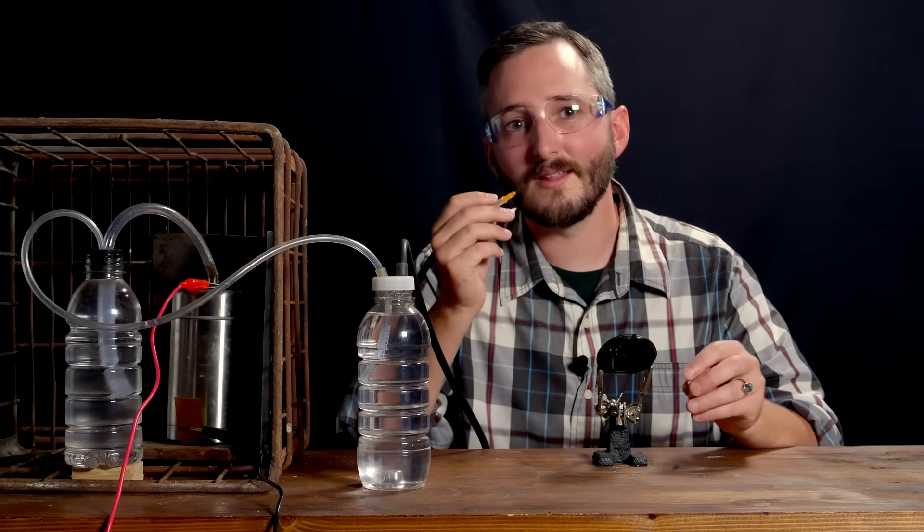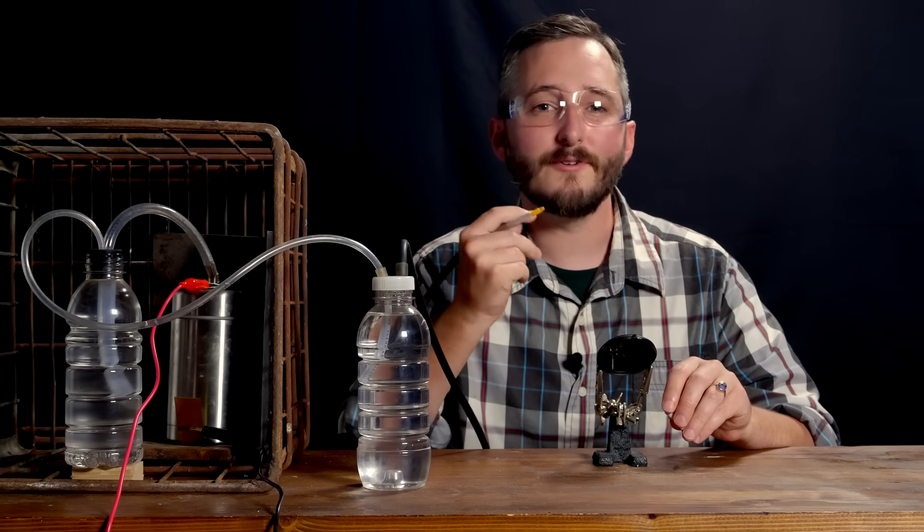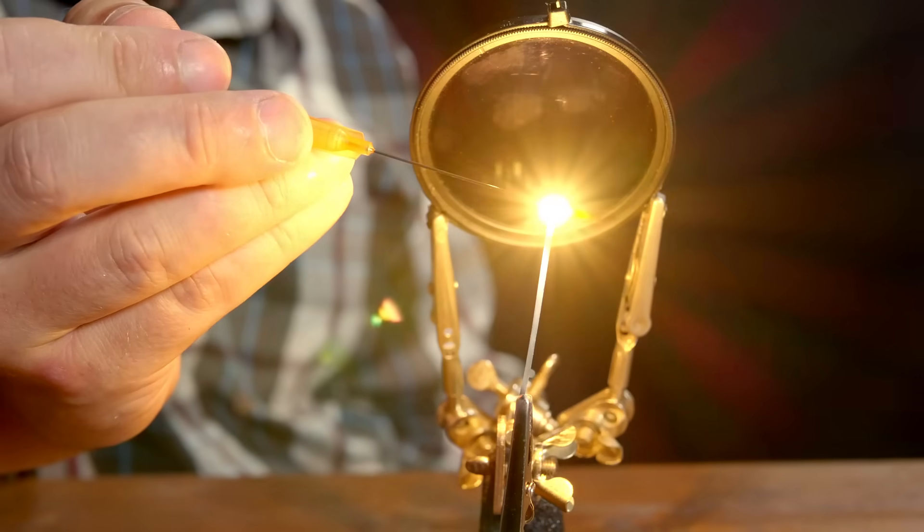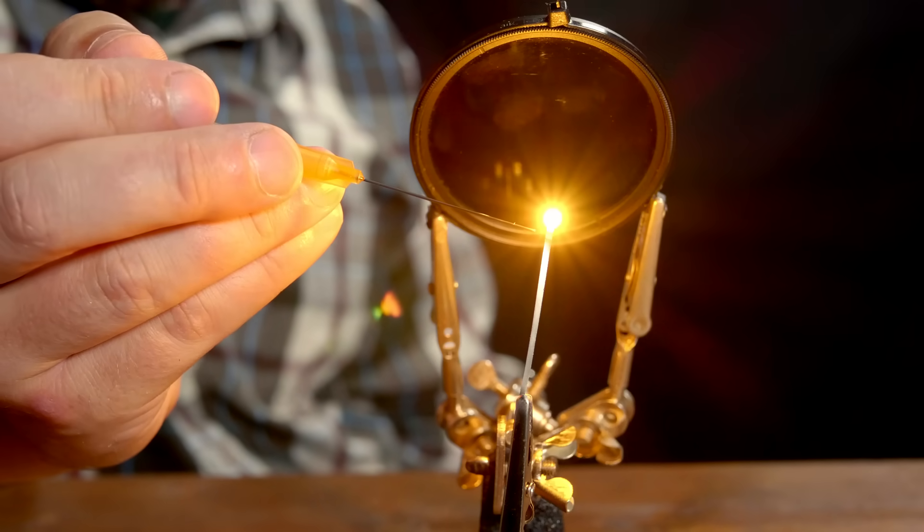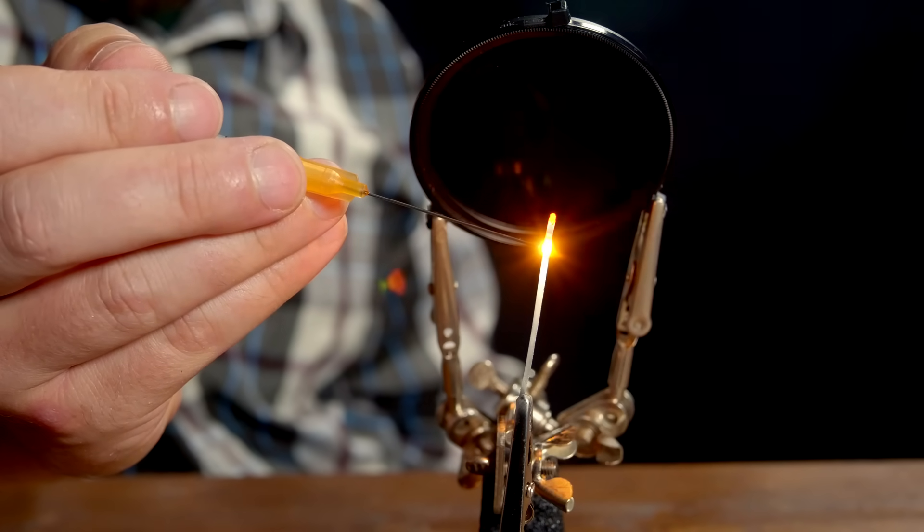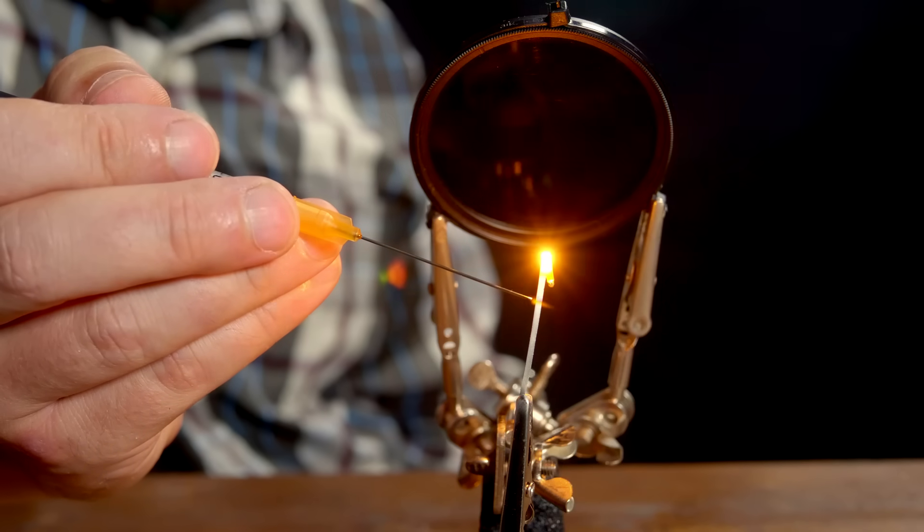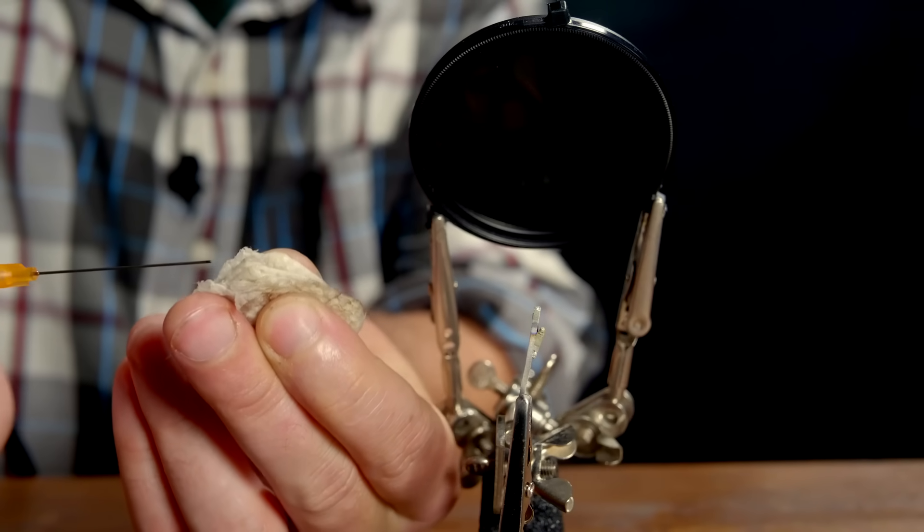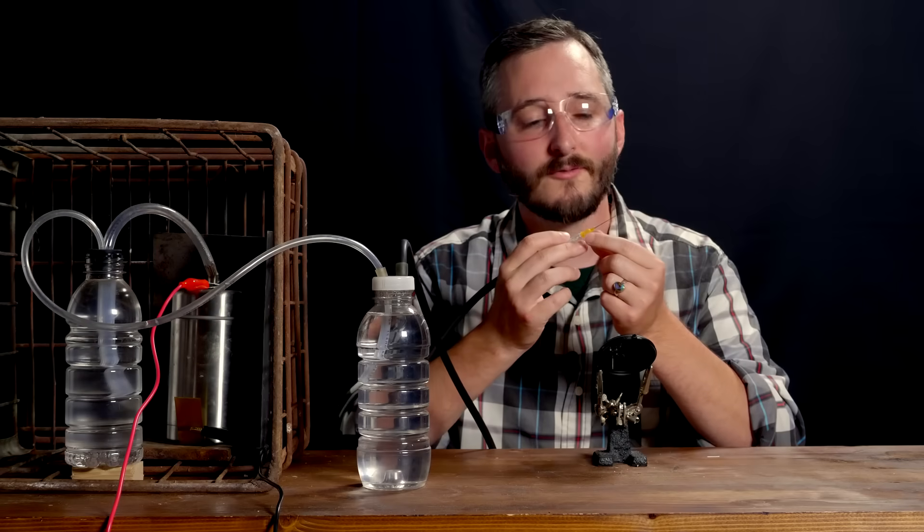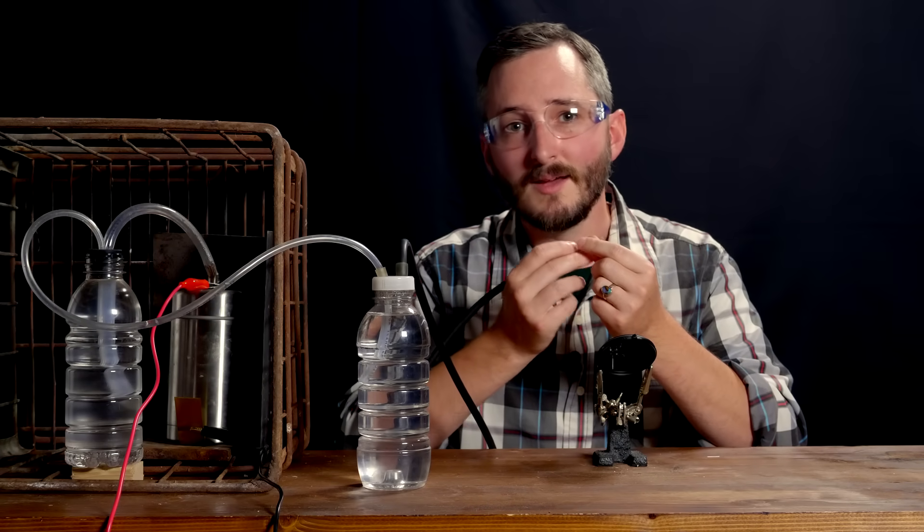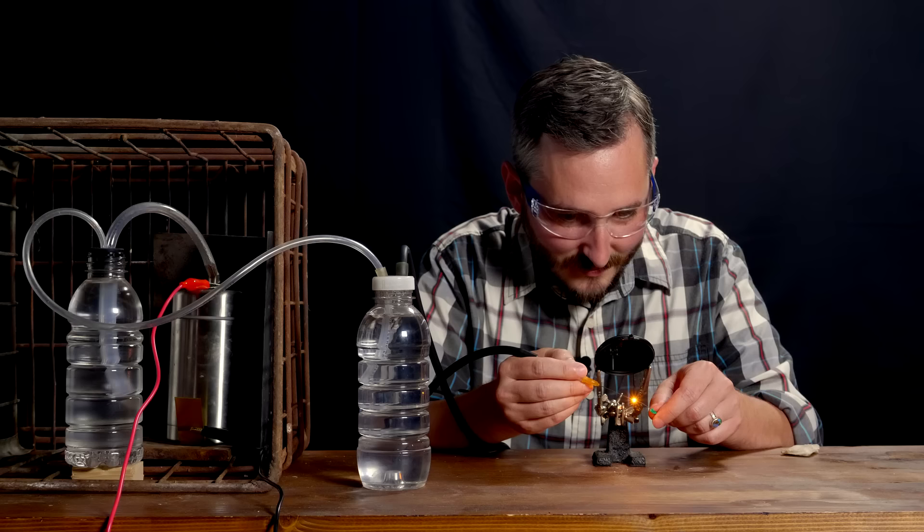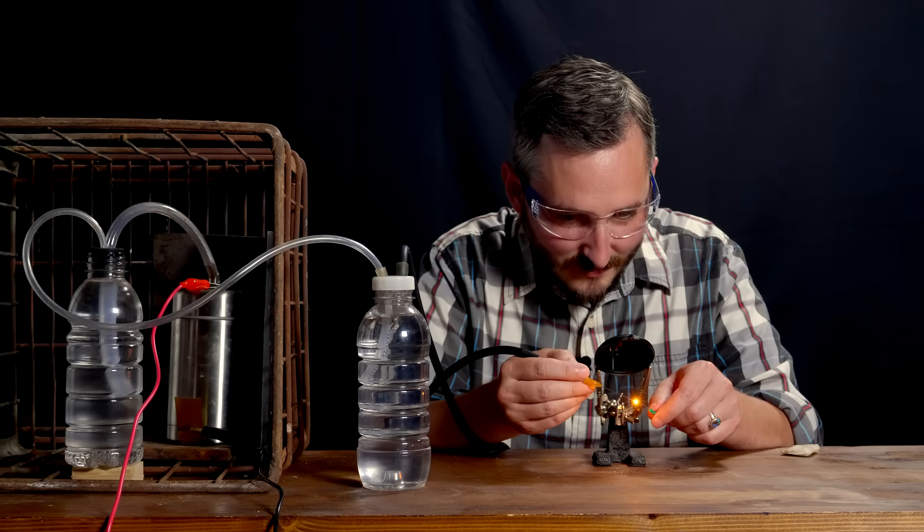Now this torch can also easily melt things like steel, but only very small pieces at a time, since the flame is only the size of a needlepoint. It is quite useful for starting chemical reactions that require a high activation temperature. But beyond small-scale chemistry experiments, I don't think there's a lot of practical use for a torch of this size. Perhaps with the exception of jewelry work. This would be great for welding very tiny wires.